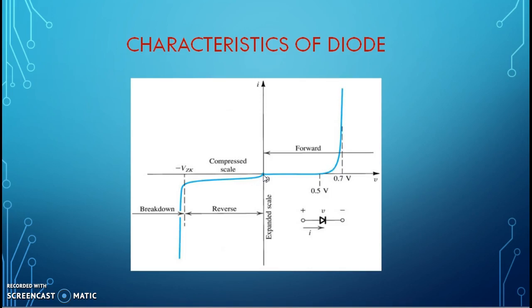In the reverse bias, it only allows the leakage current to flow due to minority carriers which is very small, and as the breakdown voltage is reached, the maximum current flows and the breakdown of the junction takes place. It is not advisable to use in the breakdown although the current rises because the junction gets damaged.